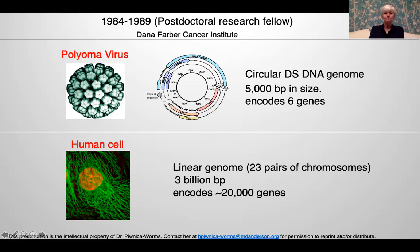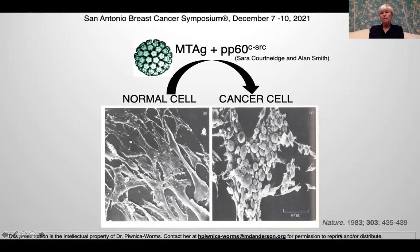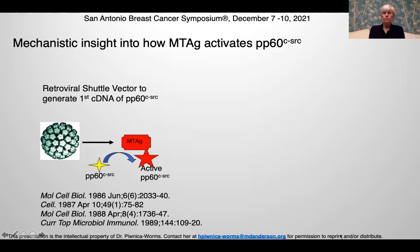I was tasked with trying to understand how the middle-T antigen could take a normal cell and turn it into a cancer cell. I was helped by a publication by Sarah Kortnage and Alan Smith about a year before I began my postdoctoral studies, which showed that the middle-T antigen bound to cellular SRC. There was no mechanistic insight into how middle-T antigen changed SRC, but they showed this was essential for middle-T antigen to function as a viral oncogene.